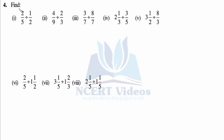Question 4: Find the answer. First: 2/5 divided by 1/2. Second: 4/9 divided by 2. Third: 3/7 divided by 8/7. Fourth: 2 and 1/3 divided by 3/5. Fifth: 3 and 1 divided by 8/3. Sixth: 2/5 divided by 1 and 1/2. Seventh: 3 and 1/5 divided by 1 and 2/3. Last: 1/5 divided by 1 and 1/2.